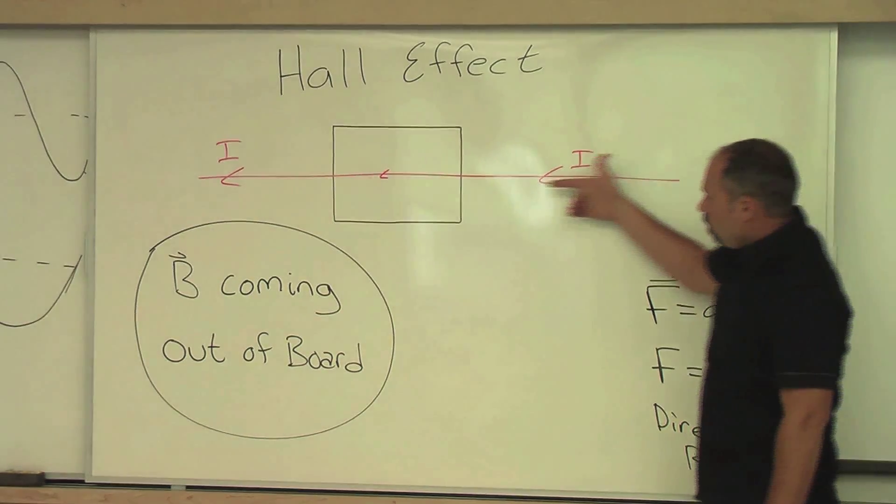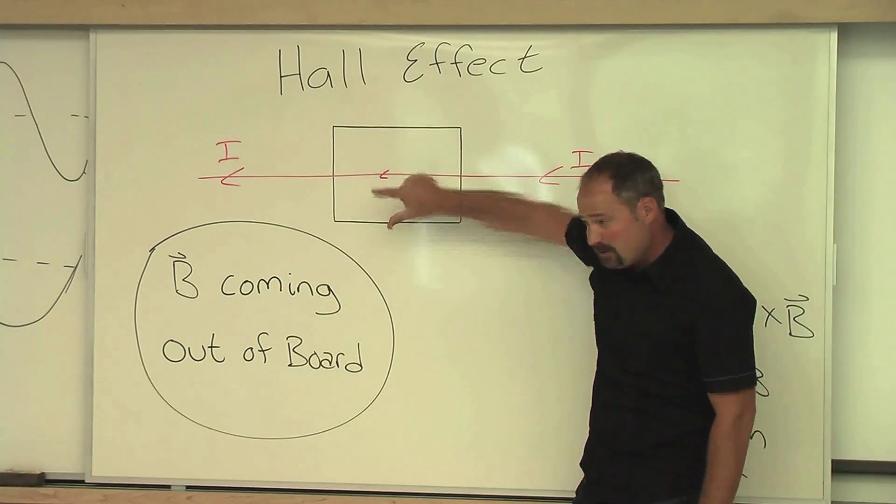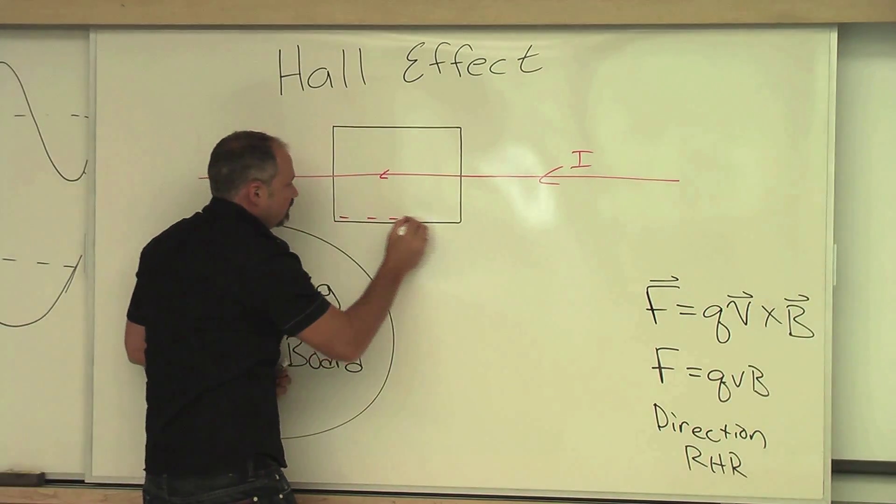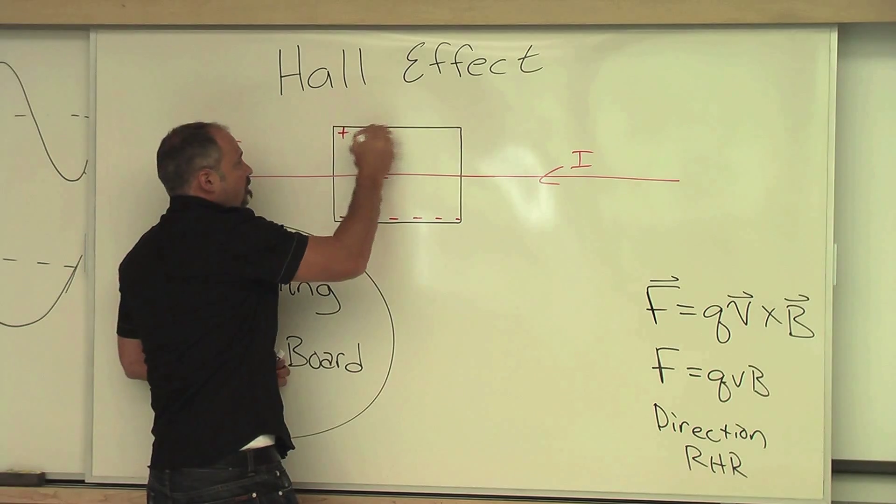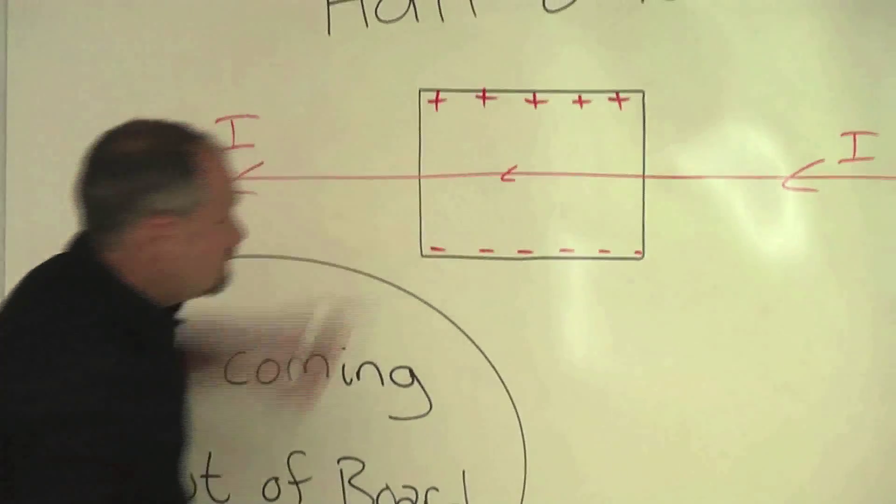So here we go. Right-hand rule tells us positive charges up, therefore negative charges down. So the Hall chip gets charged negatively on this side, positively on that side, due to the Lorentz force. This is the Hall effect.